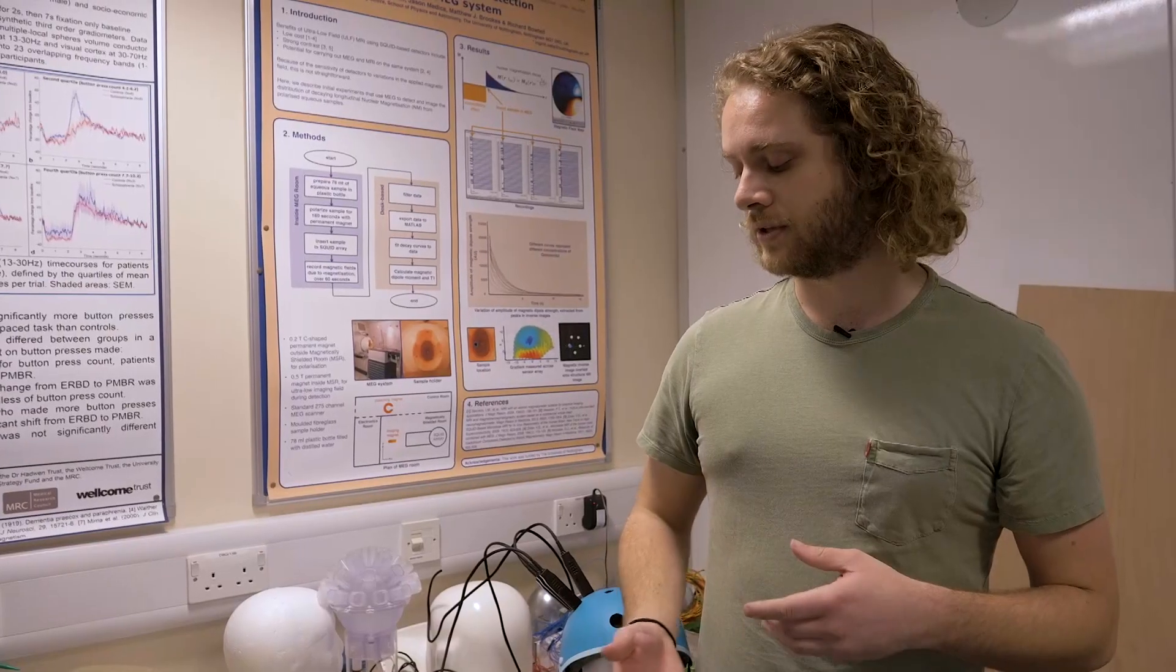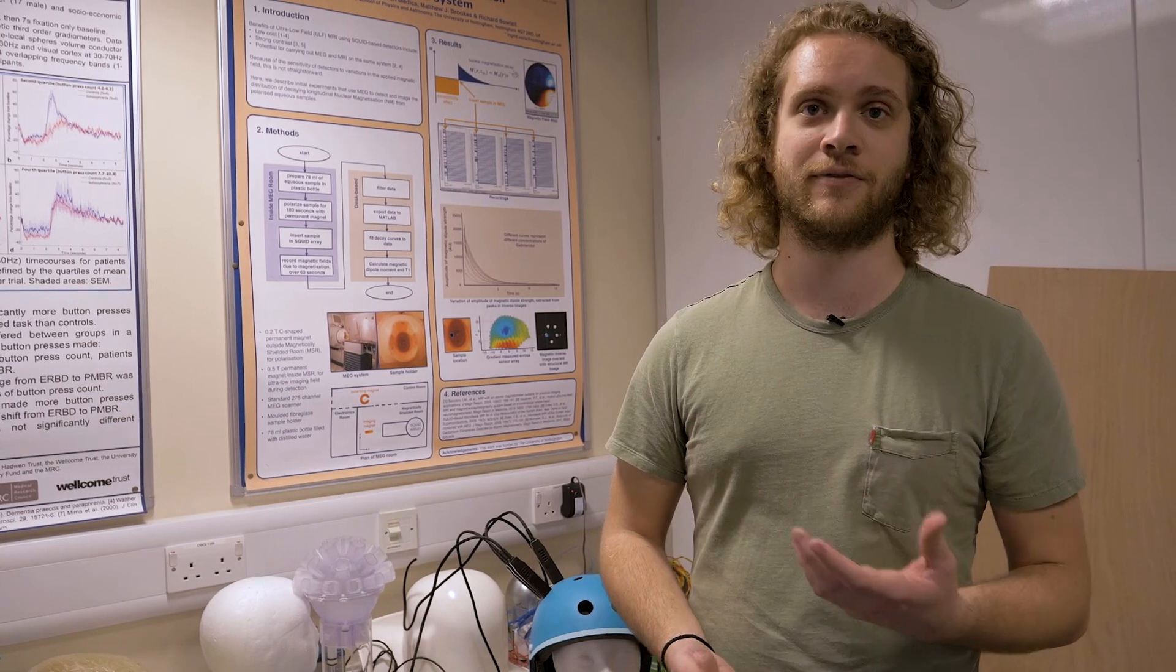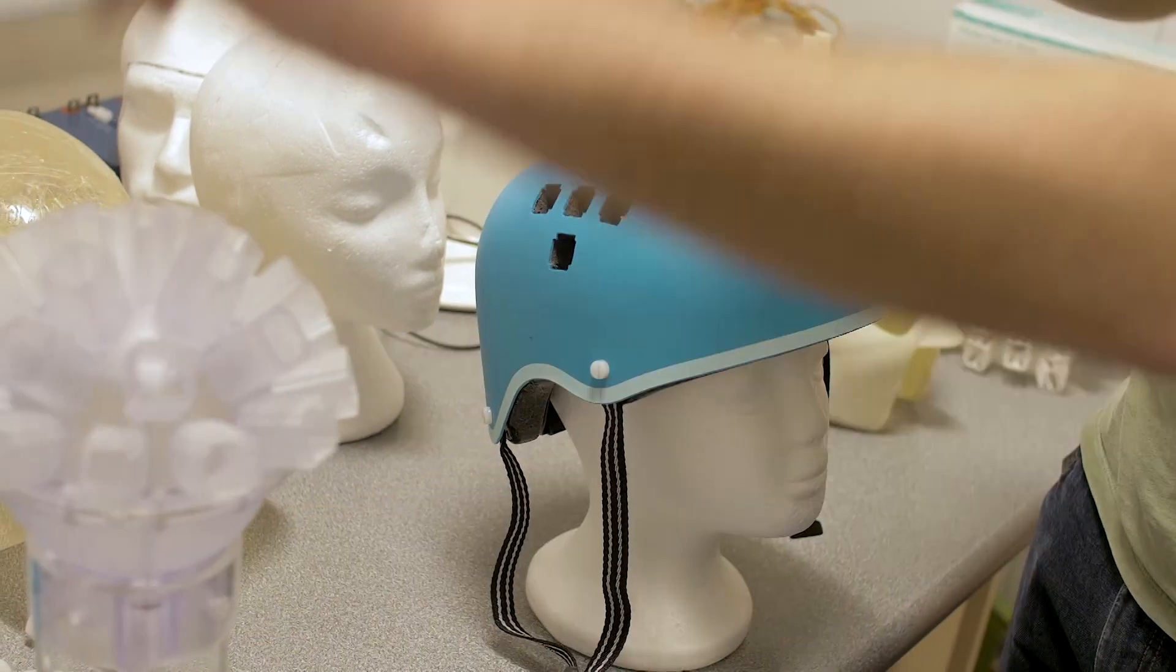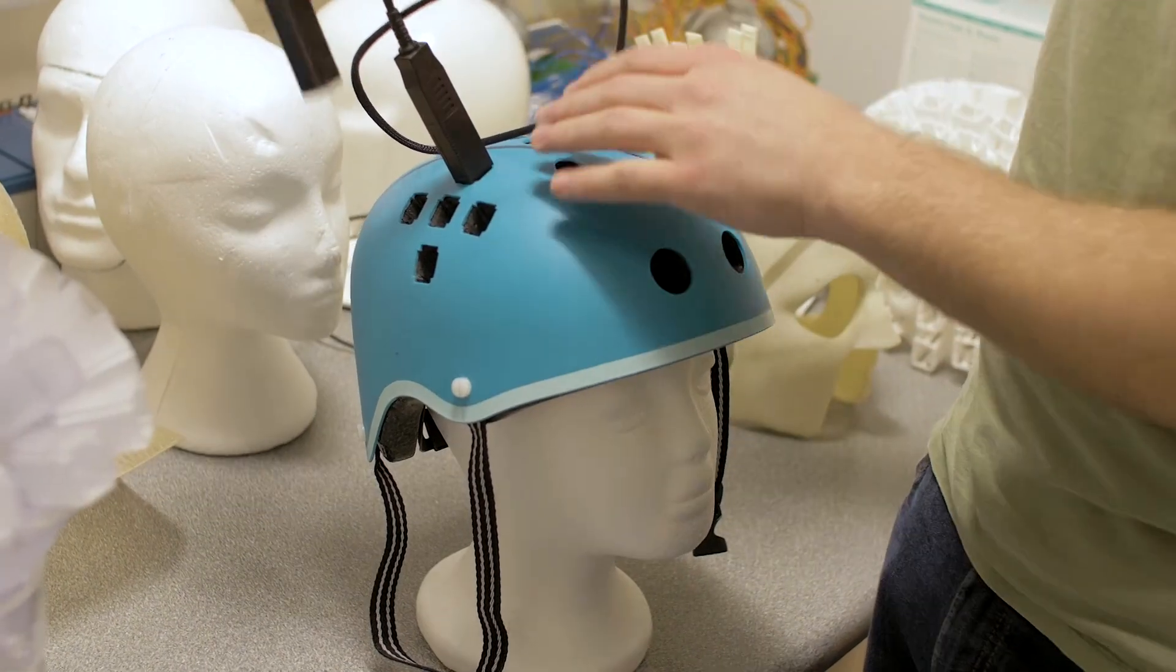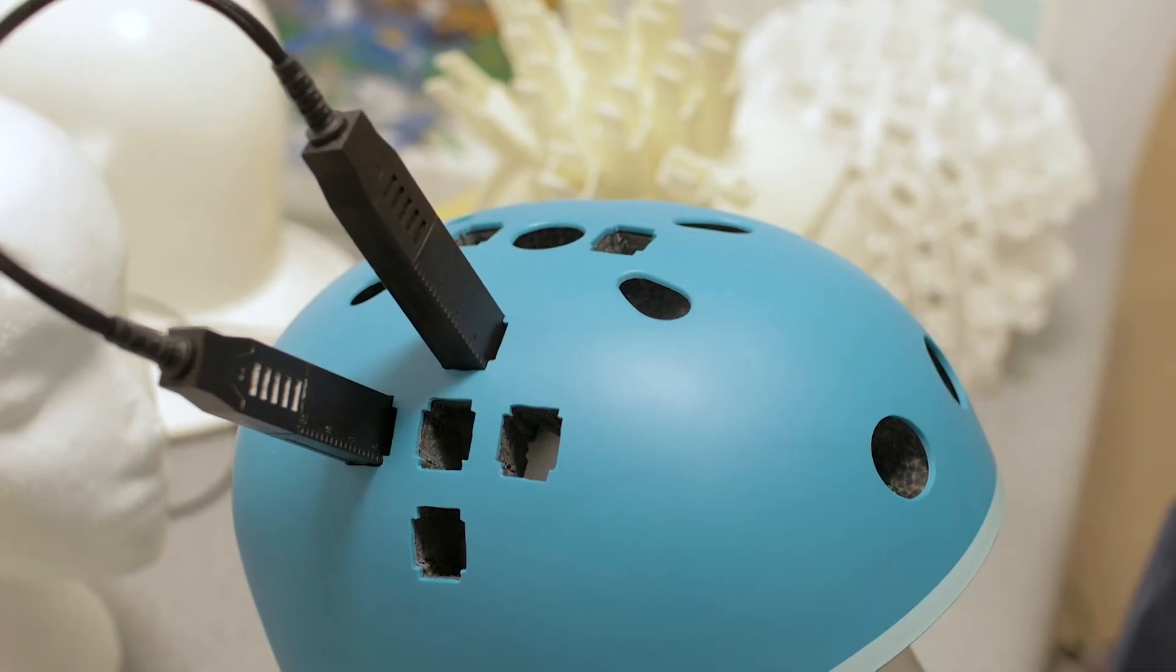Another issue is it's quite scary, especially if it's a child that's going to put these on—they're not going to want to put a scary mask over their face. So what we did instead is we've moved towards using a bike helmet. By using this, it's something that children are familiar with and they're more willing to put on.